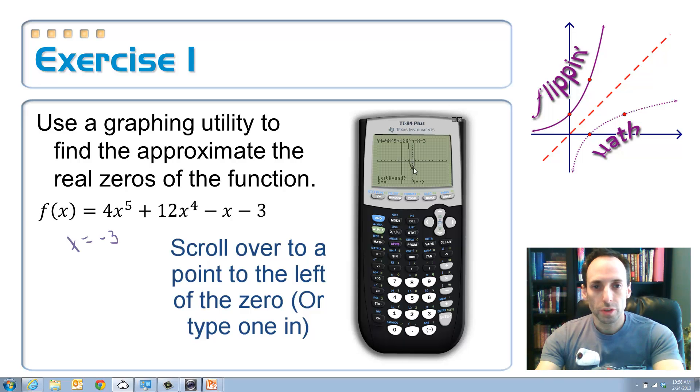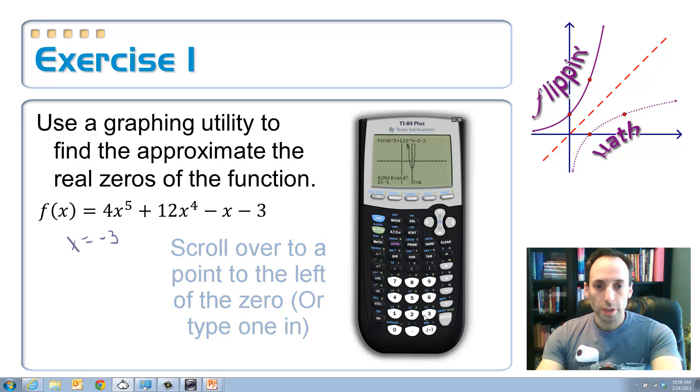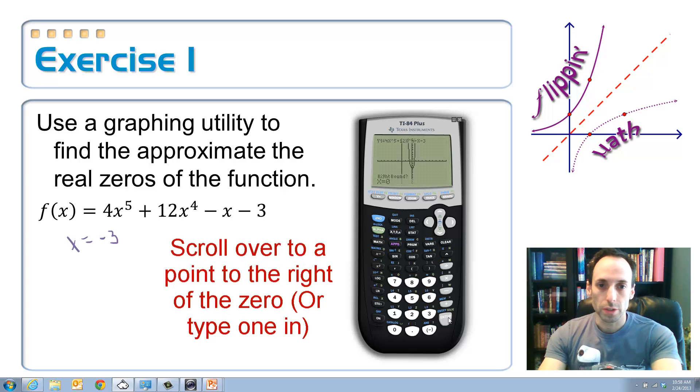Okay. There's a little spider cursor on there. And you can move it to the left or to the right. Or you can type in a number. I know that this is in between a negative 1 and a 0. So, I can just type in negative 1 for the left bound. For the right bound, I can type in 0. Hit enter.